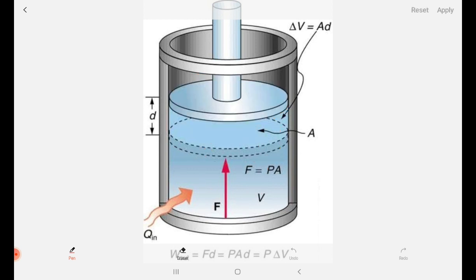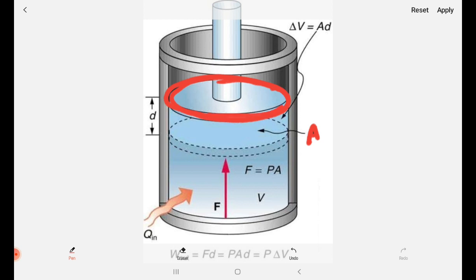So here, this piston has a certain area — like length into breadth. For a circular disk, the area is πr², and this circular disk is nothing but the piston. The total area covered by this piston is denoted as A.